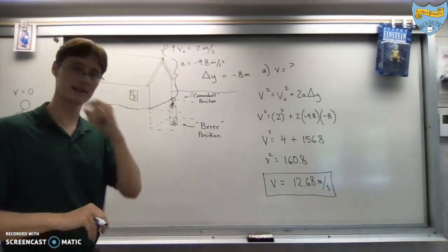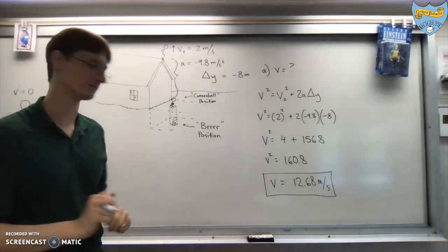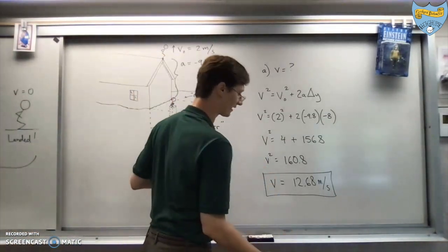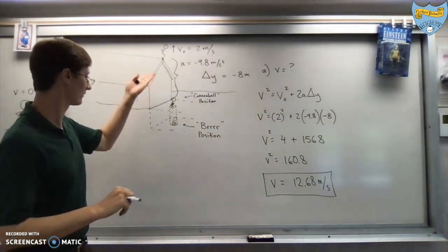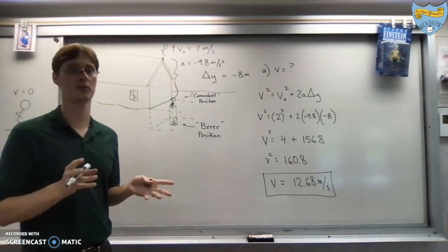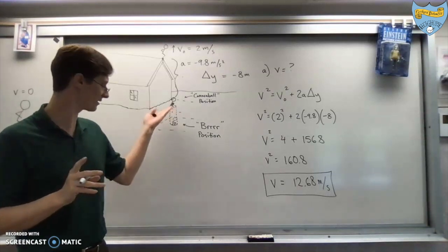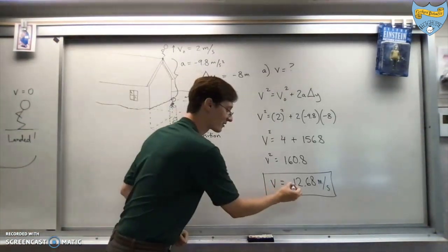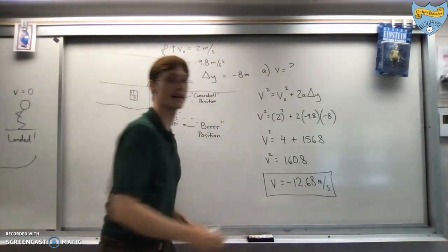That answer right there is almost great. And it's the one your calculator will tell you. But, when the guy hits the snow, is he going up or down? If you said up, you're really confused. No. Of course he's going down. He's going down. So, therefore, this should be negative.